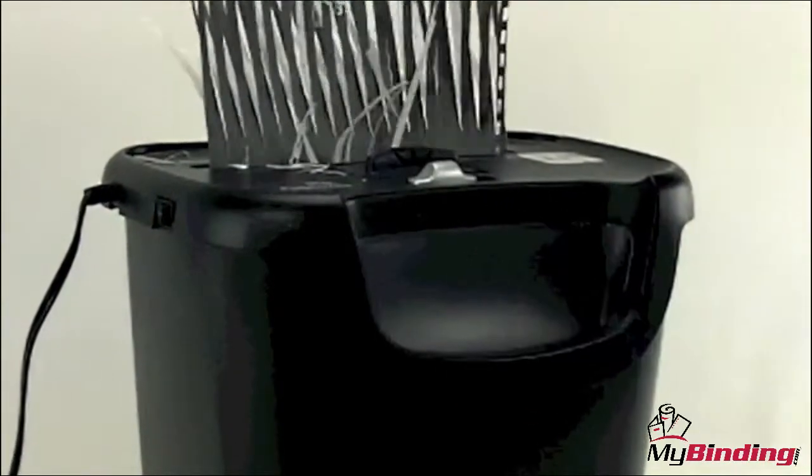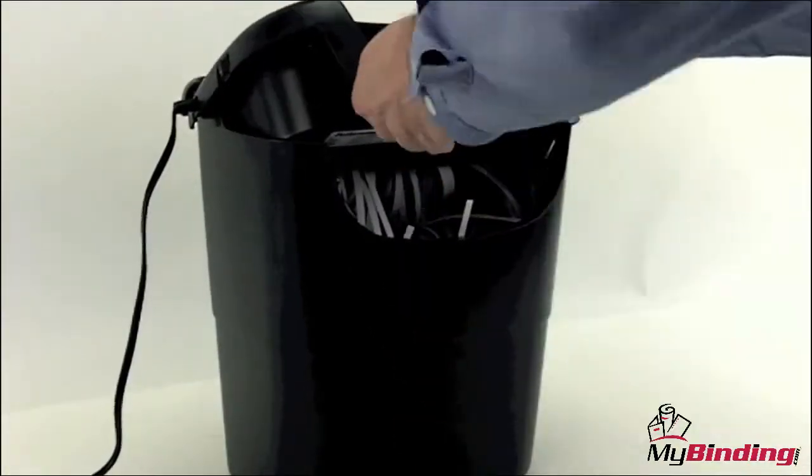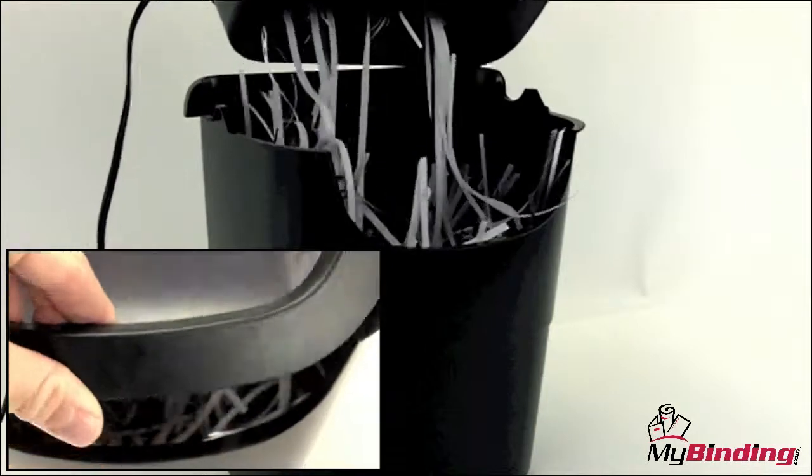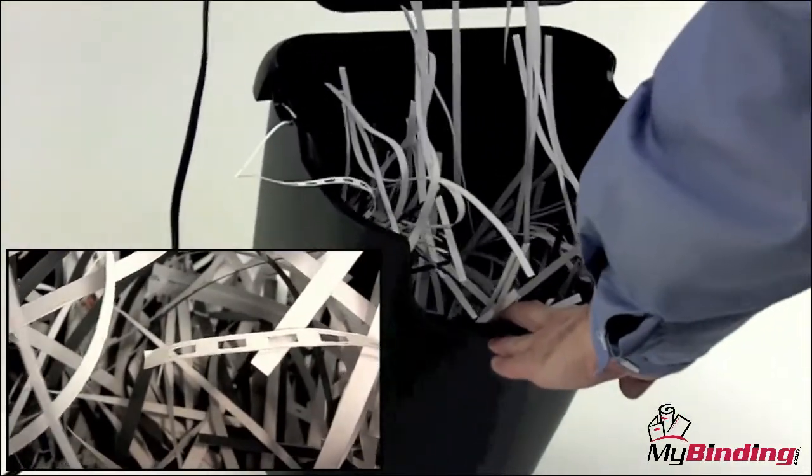The waste bucket below where the shreds end up is a 3.7-gallon bin. This can hold a lot of waste, however, the long single strips do take up a lot of volume and need to be repacked from time to time.